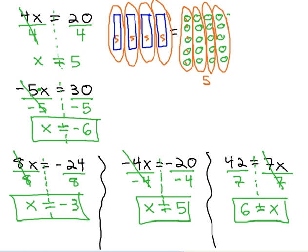We can check these answers we found by replacing x with the number we found x to represent. 8 times negative 3 is negative 24. Negative 4 times 5 is negative 20. 7 times 6 is 42.